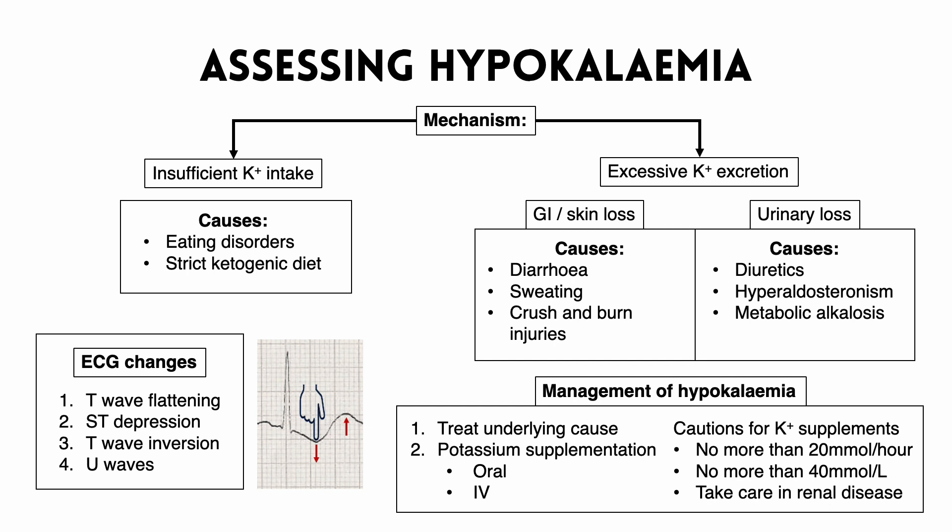Now that we've identified hypokalemia and know what to look out for on the ECG, what do we do about it? First and foremost we want to treat any underlying cause. So if the patient has diarrhea due to gastroenteritis we want to think about whether we can reverse that, or if they have Conn's syndrome causing hyperaldosteronism, can we get that under control?